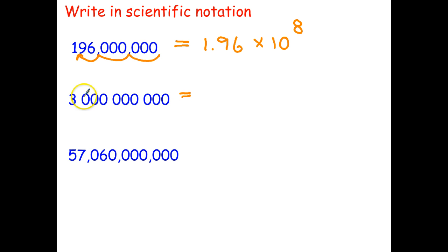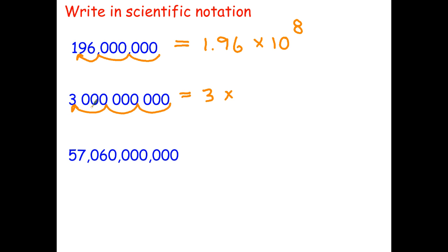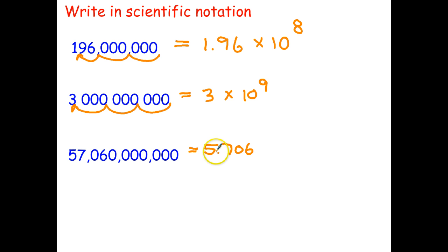Let's see how you went. This is going to be 3 — I could put 3.0, but it's easier to just write the 3, since the decimal point is after the 3 for a whole number. We move the decimal point back 9 places, so it's 3 times 10 to the power of 9. And the last one: move the decimal point after the 5, giving 5.706. It's simpler to write just 5.706 rather than including trailing zeros, as they don't change the value. Move the decimal point back 10 places: 5.706 times 10 to the power of 10. That's how you write ordinary numbers in scientific notation.